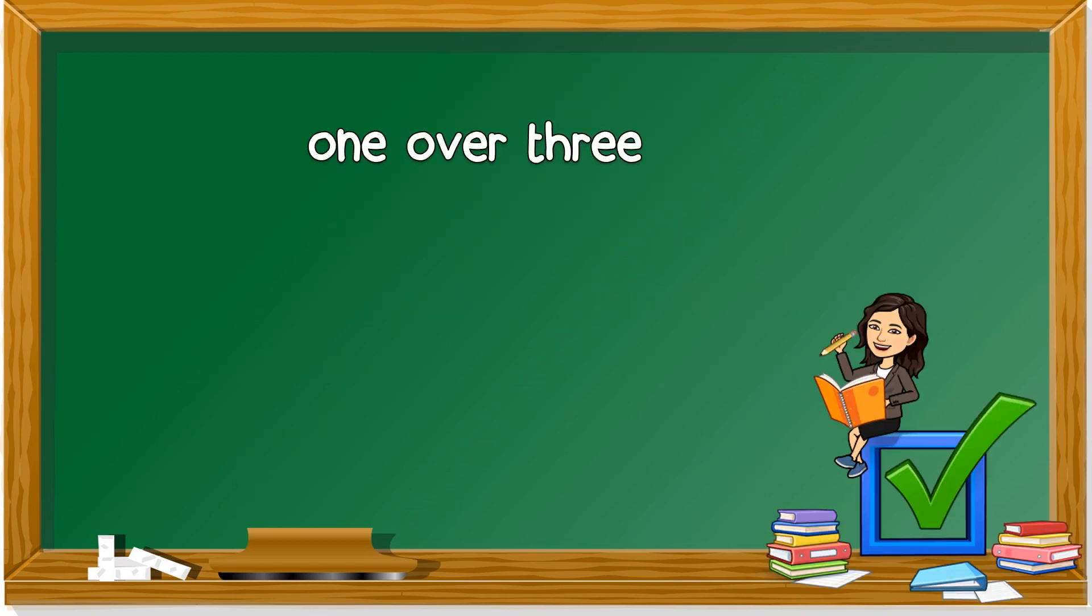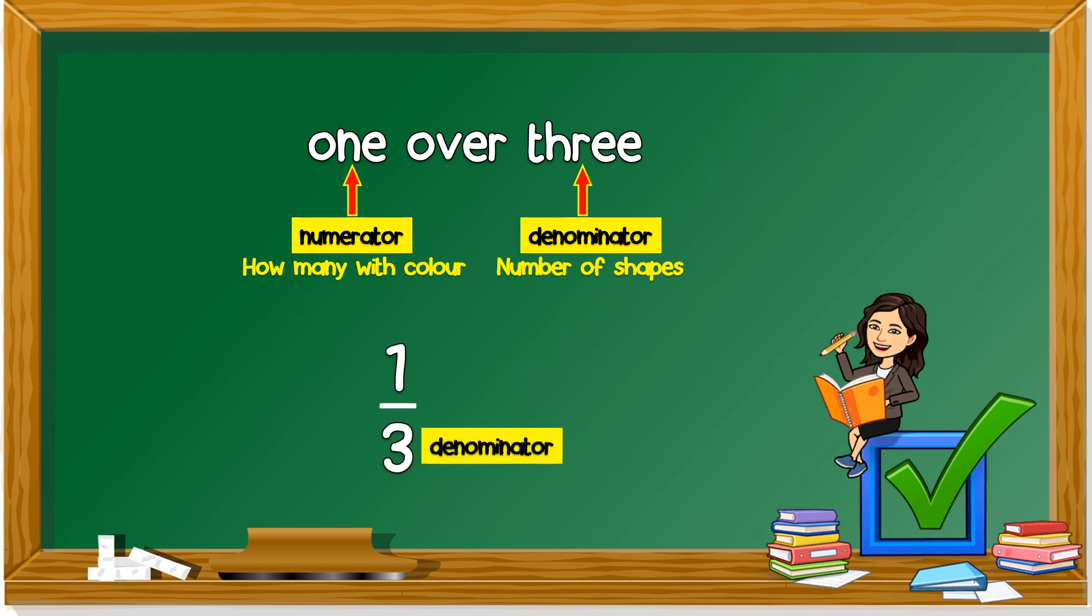Remember, this one is denominator. The number of shapes, how many are there? Berapa bahagian? Number of parts. And, this is the numerator. How many with certain colors? Below denominator, on top, numerator. Always remember this. Remember, what is fraction? Fraction is of equal parts. And, you have also learned what is numerator and denominator. Numerator on top, numerator ke atas, denominator at the bottom, denominator yang di bawah itu, di tengah-tengah ialah over. Now, I'm going to introduce you to diagrams.